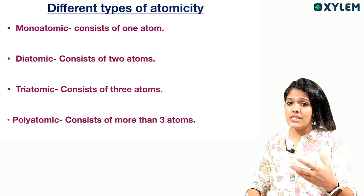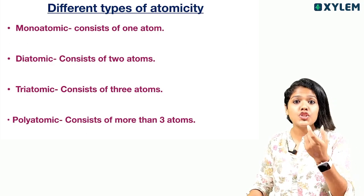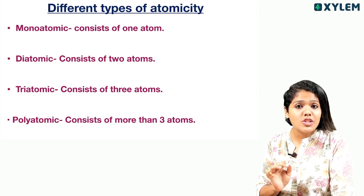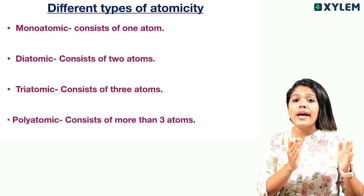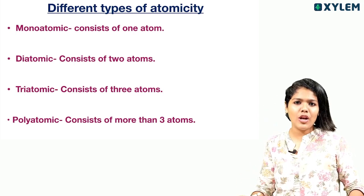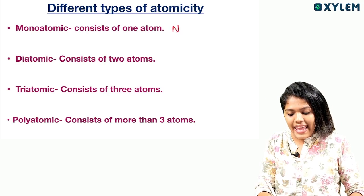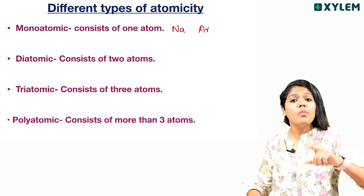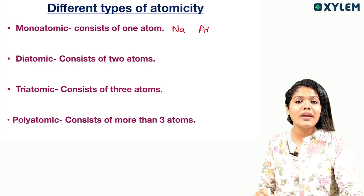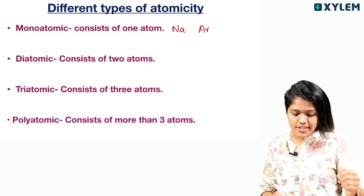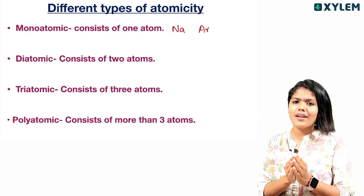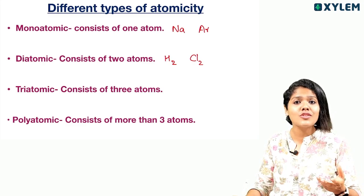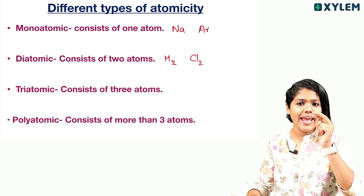It is about atomicity — different types of atomicity. It consists of only one atom: monoatomic. For example, sodium Na, argon Ar — we call these monoatomic. Diatomic consists of two atoms. For example, hydrogen H2, chlorine Cl2, nitrogen N2, oxygen O2 — these are diatomic.